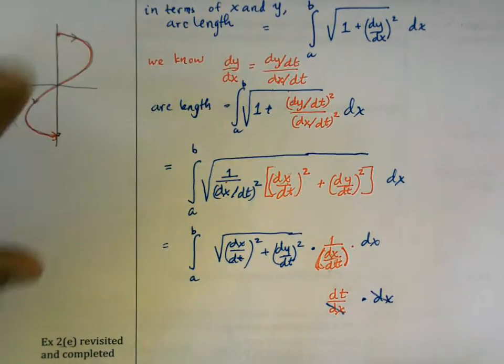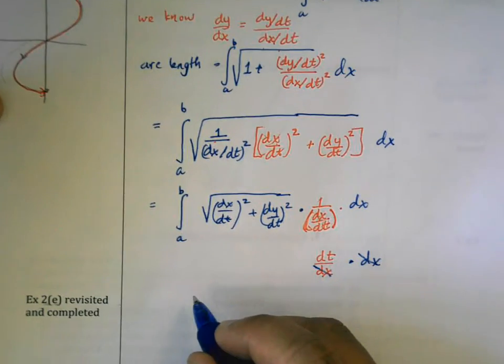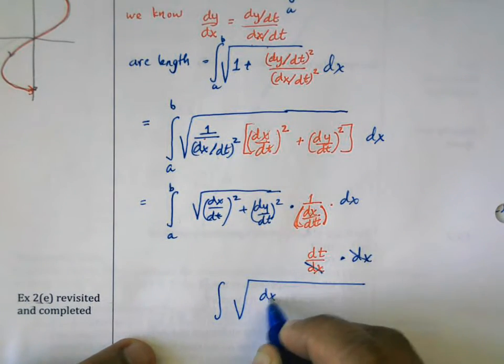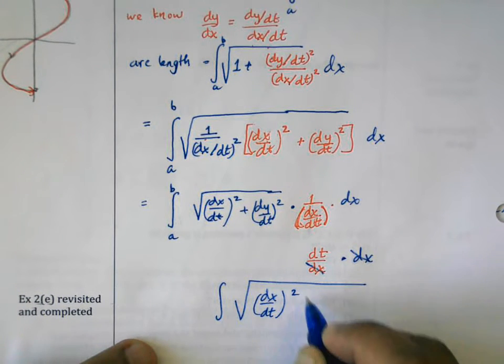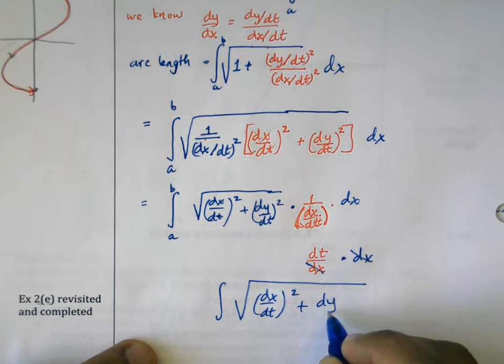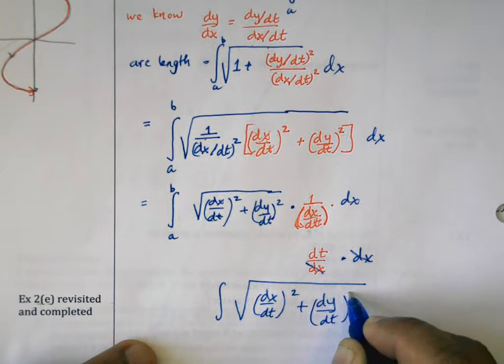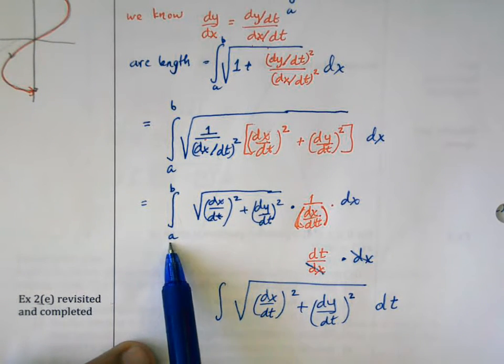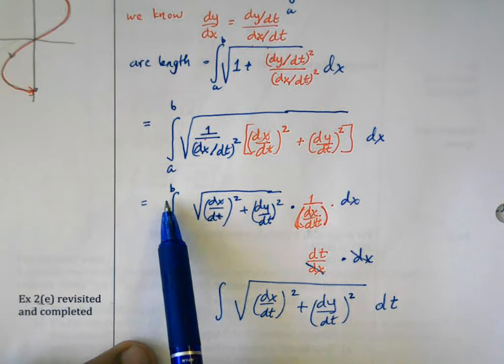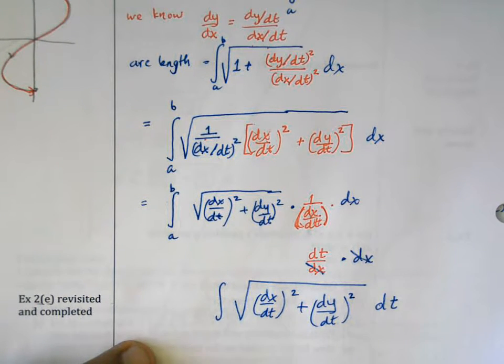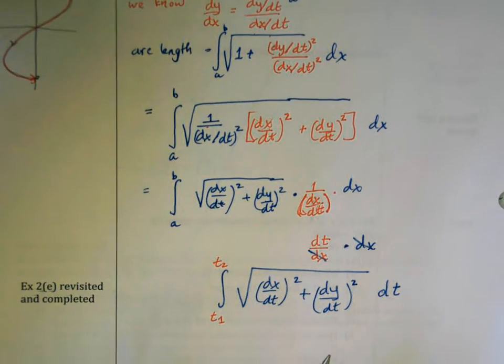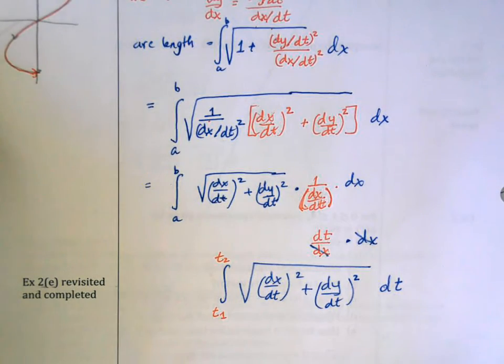And what I end up with in the final representation of arc length here is the integral of the square root of (dx/dt)² plus (dy/dt)² dt. And instead of integrating between a and b, before a and b were x values, now we're integrating with respect to t. So we have to integrate from t₁ to t₂, where t₁ and t₂ are two given moments of time.